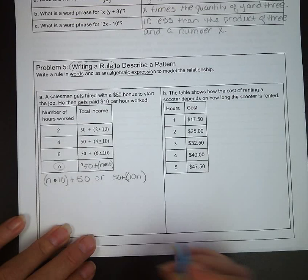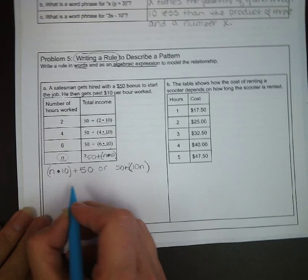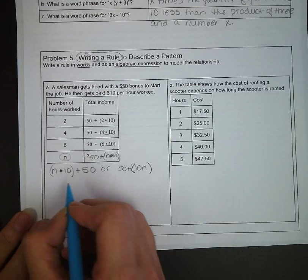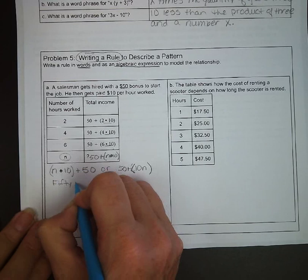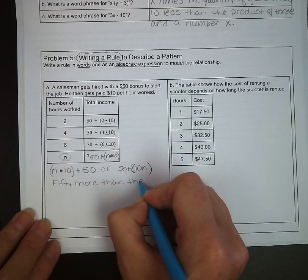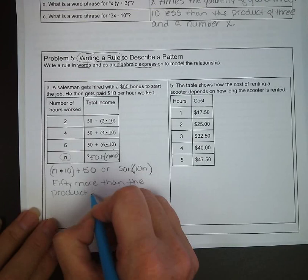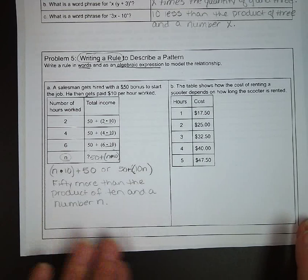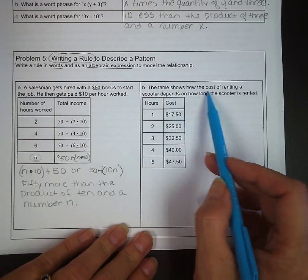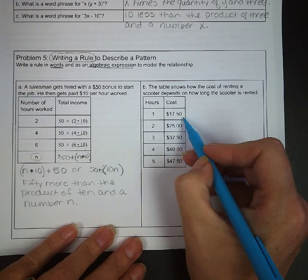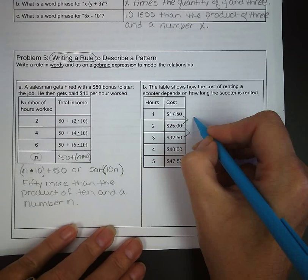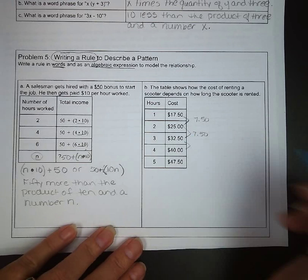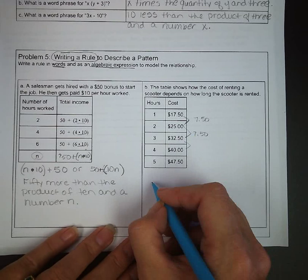Okay, so now we want to put this into words, and so we can say 50 more than the product of 10 and n. Okay, so if we're looking at letter B, the table shows the cost of renting a scooter depends on how long the scooter is rented. And you can see we are increasing by a set amount each time, and it looks like we are going up $7.50 each hour that the scooter has been rented. So that means our base cost of renting a scooter before we pay for any hours is $10.